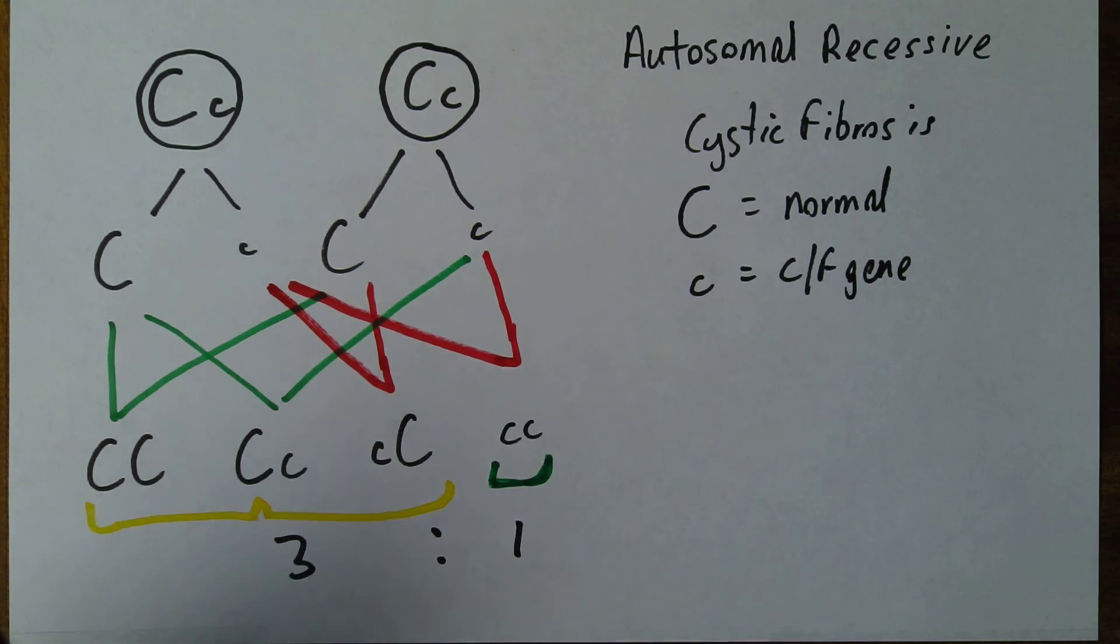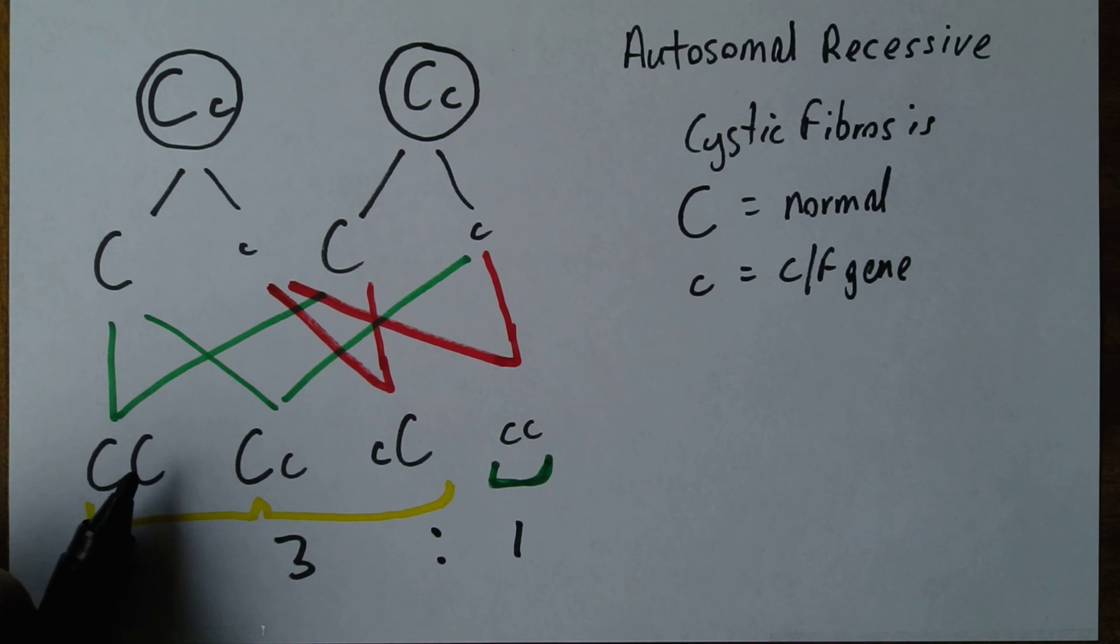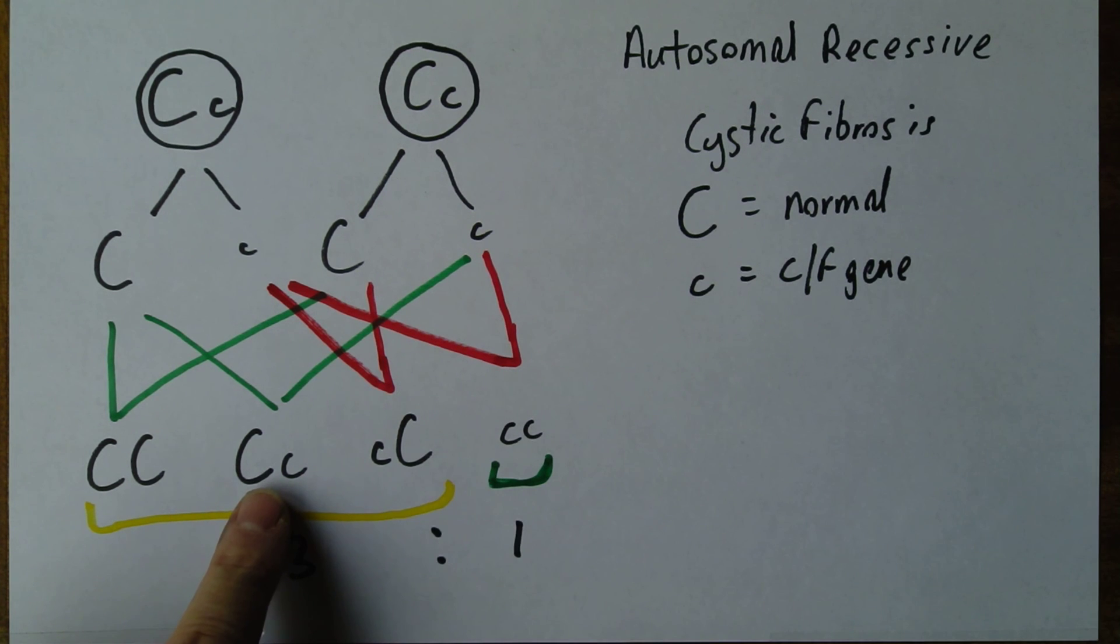We could tell them there's one chance in four that the child would be perfectly normal and incapable of carrying the gene on to the next generation. But we could tell them there's a 50-50 chance from these two that their child, although phenotypically normal, would be a carrier and could potentially carry cystic fibrosis on into the next generation.